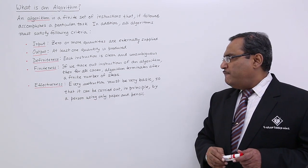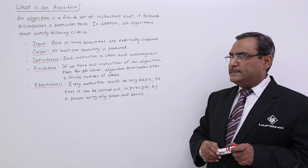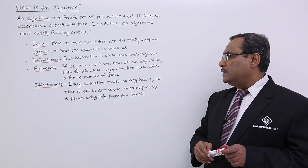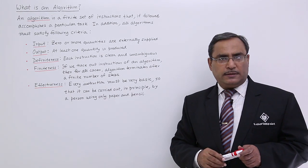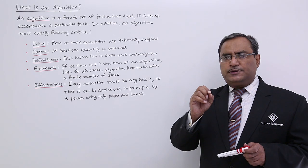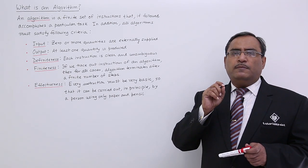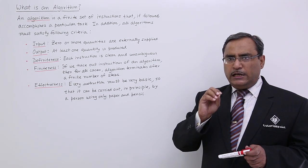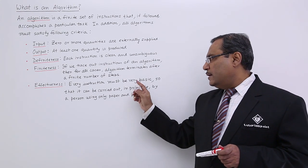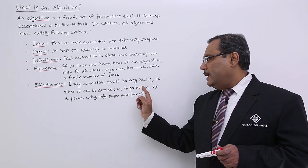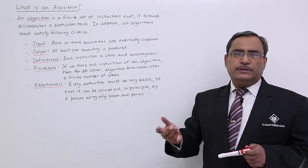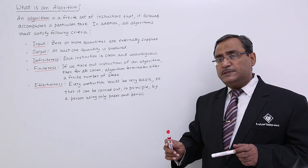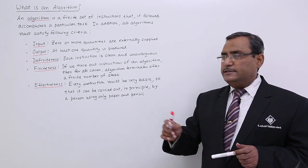Effectiveness: Every instruction must be very basic so that it can be carried out, in principle, by a person using only paper and pencil. That means each and every instruction must be very clear to us and must be very basic. This is why each and every instruction must be effective in its nature.